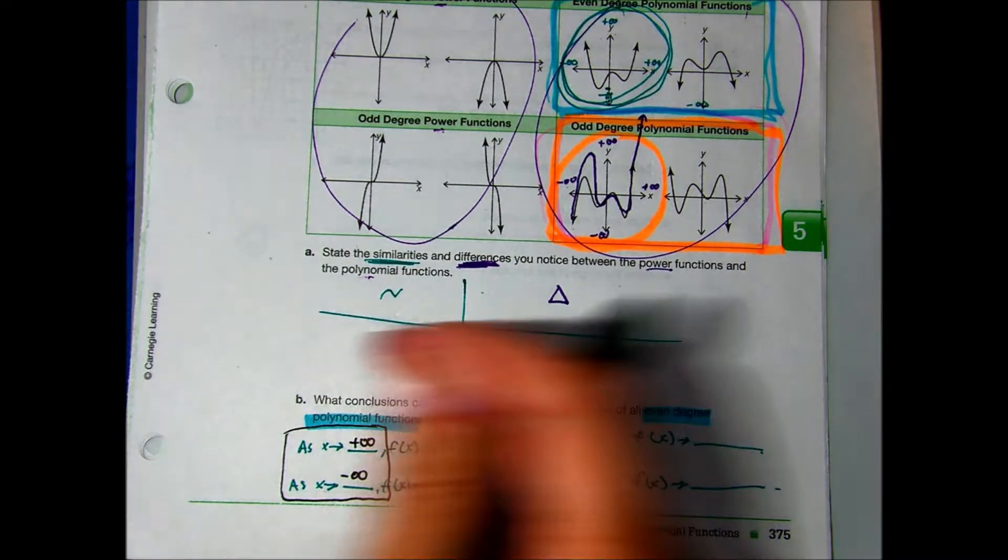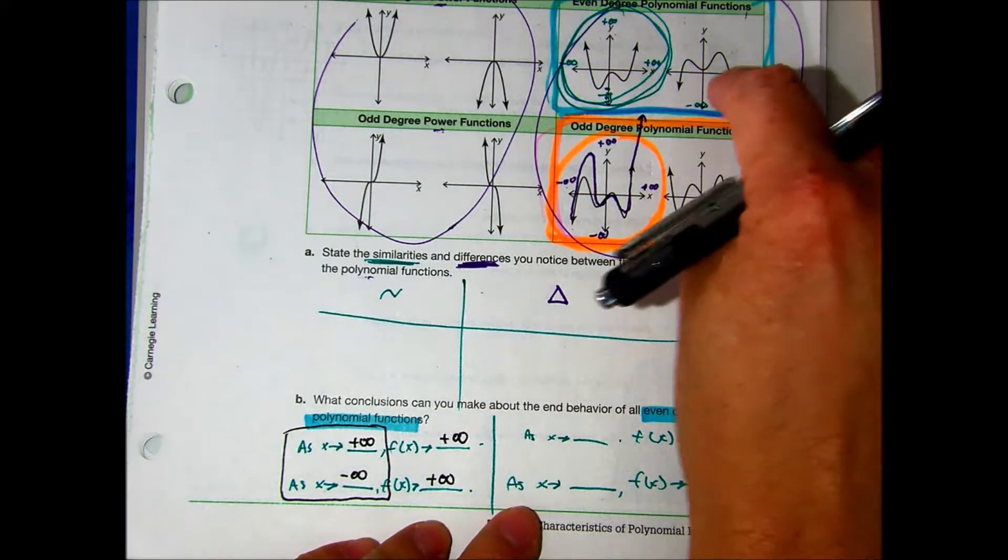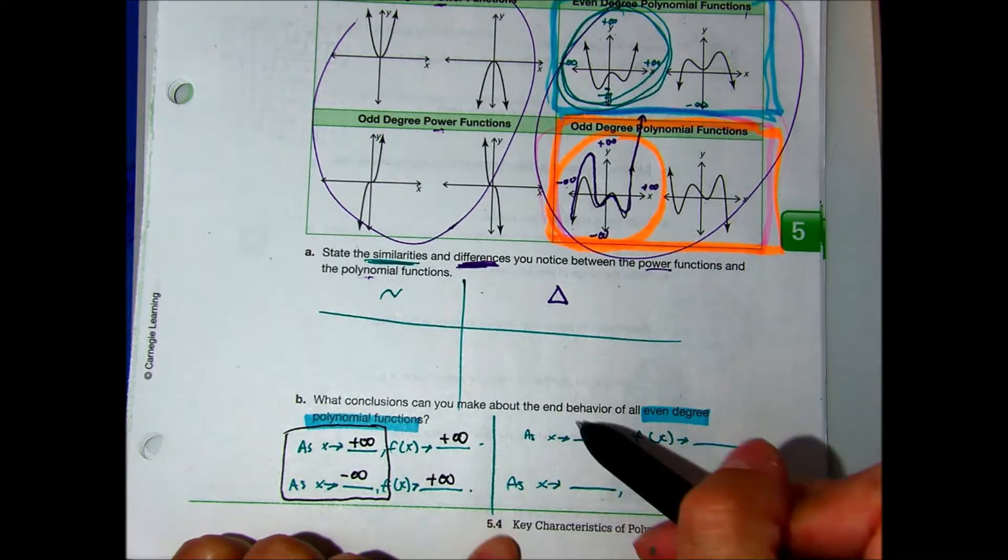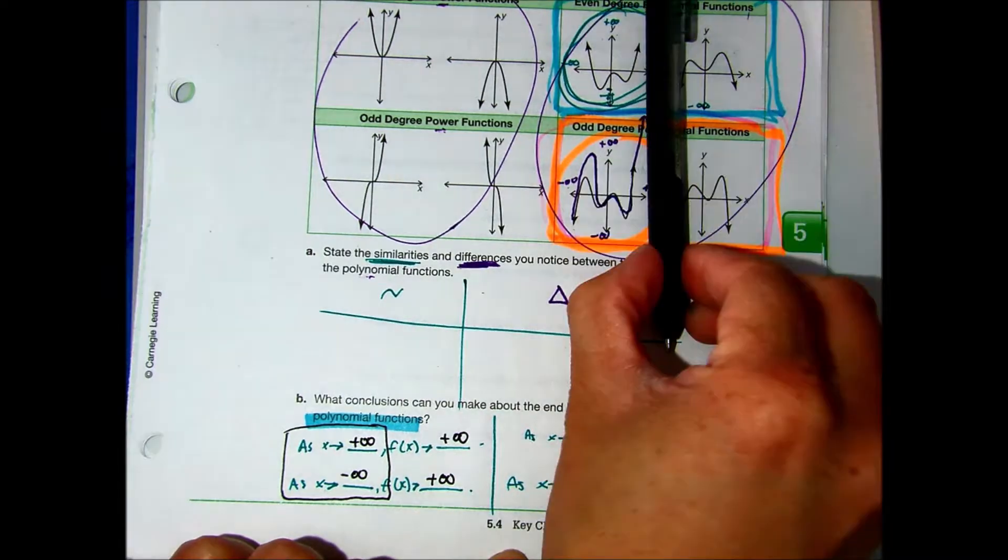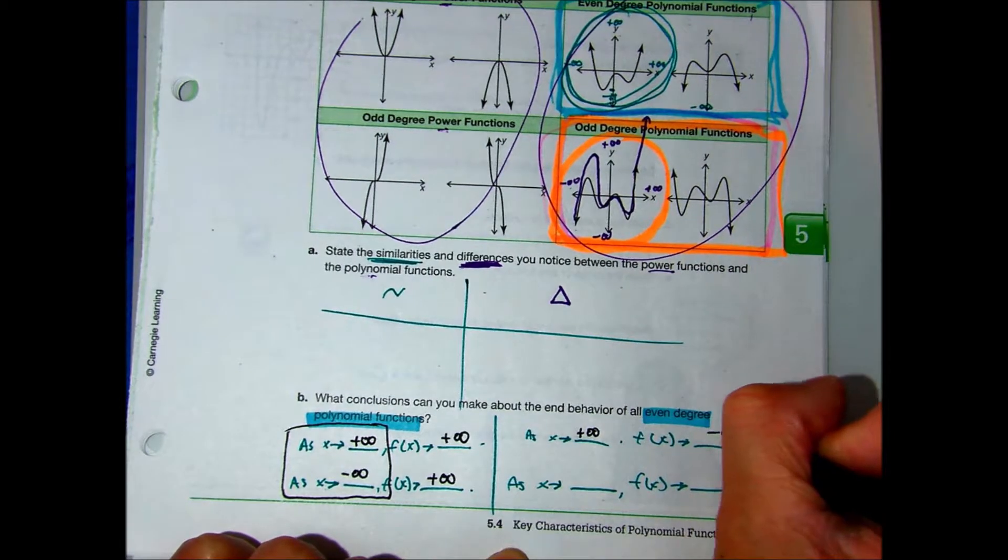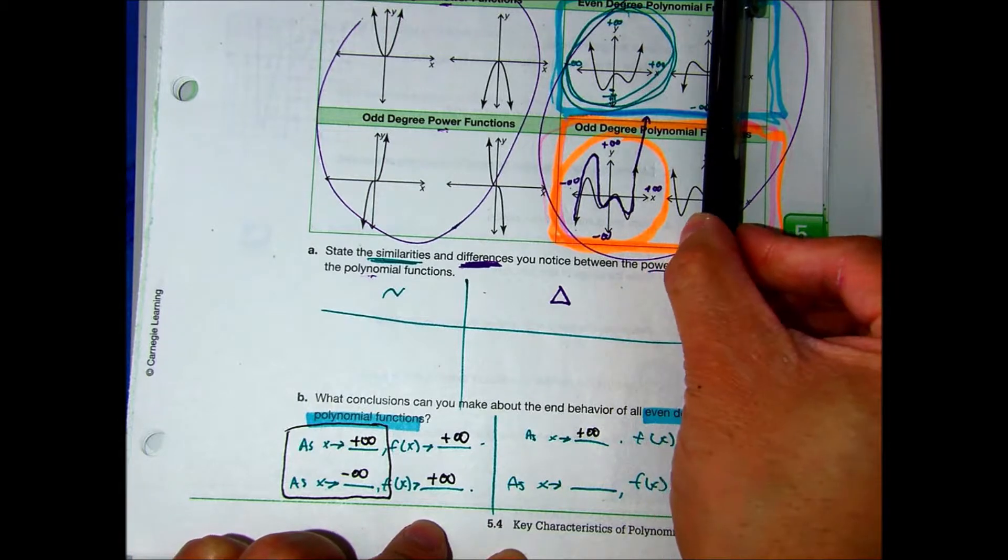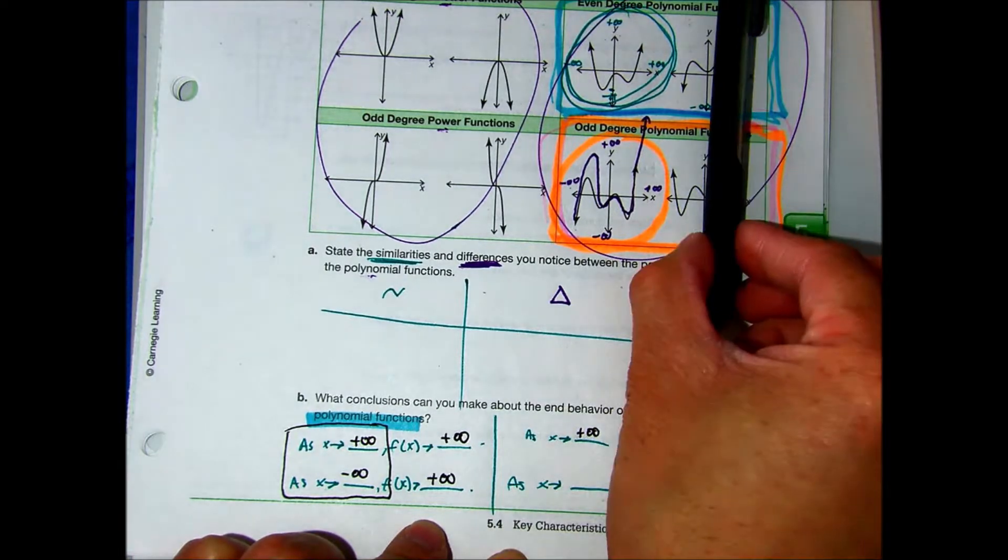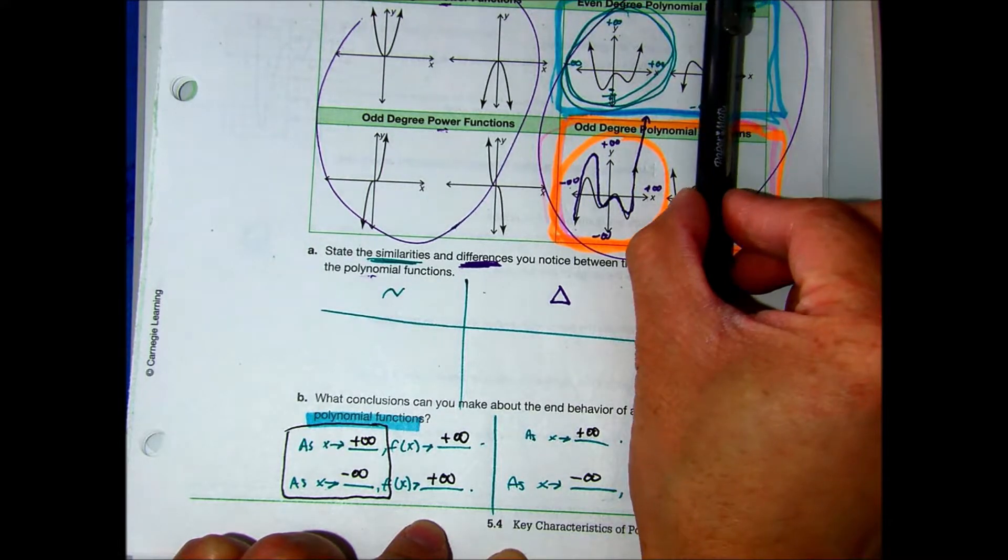Rafi, go ahead and pick one. Similarity, difference, or end behavior? All right. So, this is the right side. Let's focus on this right graph. Ready, set, go. As x equals to positive infinity. Correct. As x equals to negative infinity. Good.